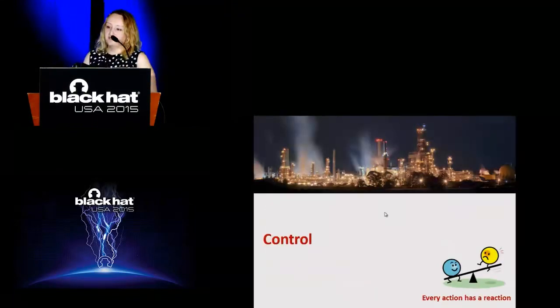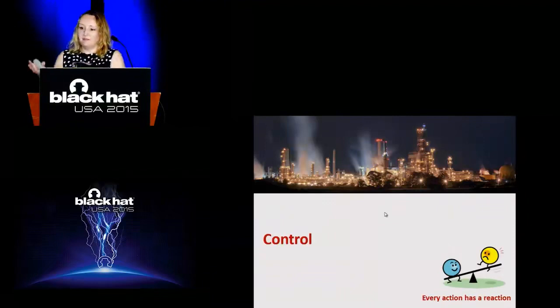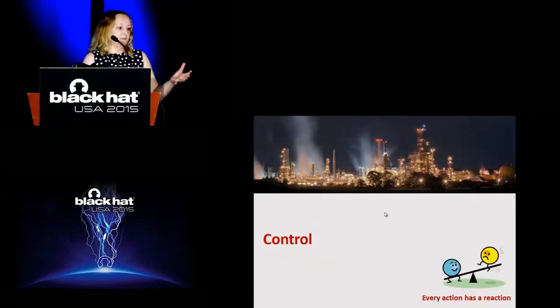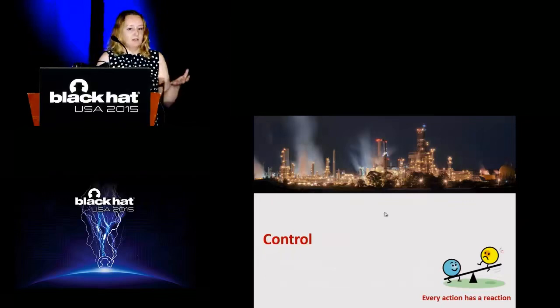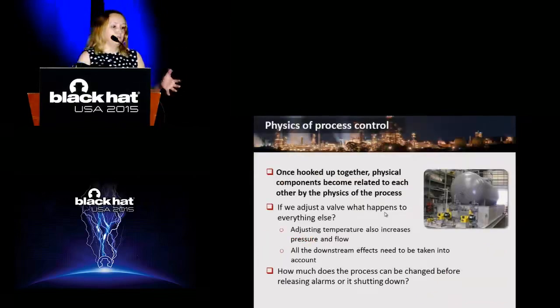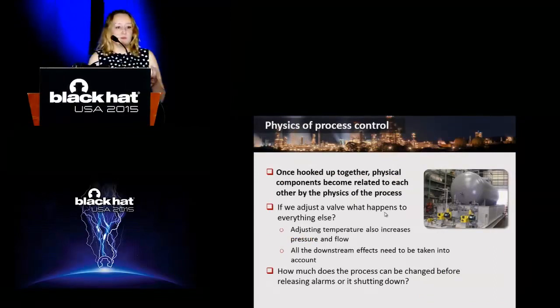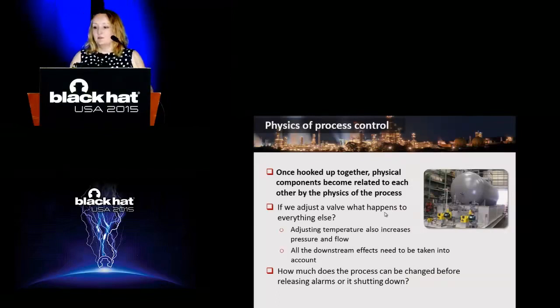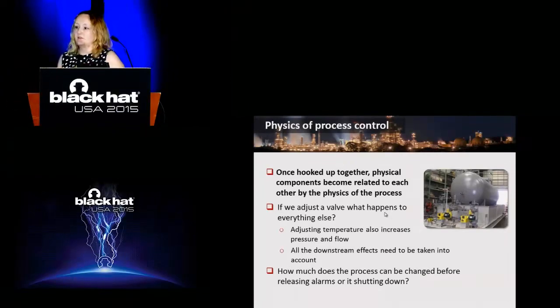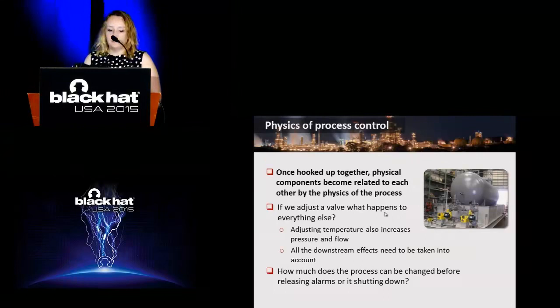With that we transition to the control stage. Discovery stage is about static discovery of the process. But physical process has continuous physical dynamics. It means if you adjust something in the physical process, it will have lots of different impacts. This is what we discover in the control stage. Once equipment is hooked up together, it starts to be related to each other by the physics of the process, even if that equipment does not talk to each other electronically. If you adjust a valve, everything else adjusts as well. If you change temperature, the flow and pressure also change. Effects propagate downstream and cause different effects. The attacker needs to take care about all those downstream effects.